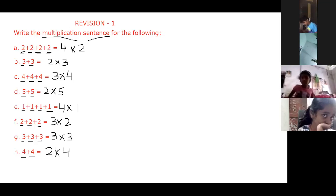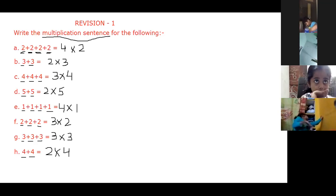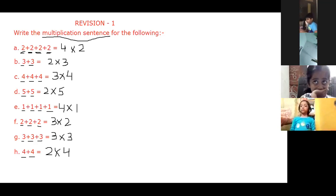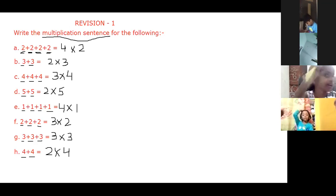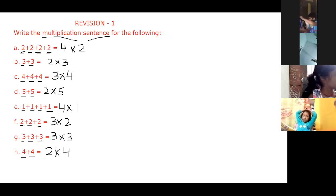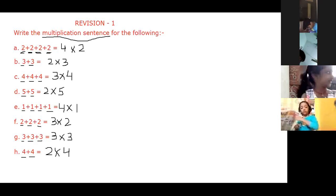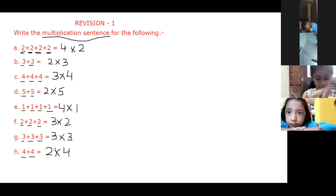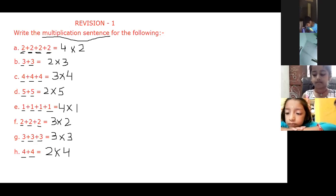Ananya, read the first answer. Four into two is equal to eight. Okay — no need to write 'is equal to eight,' but that is also correct. Second answer. Two into three is equal to six. Two into three is equal to six — that's correct.